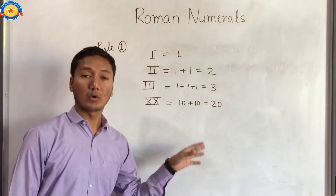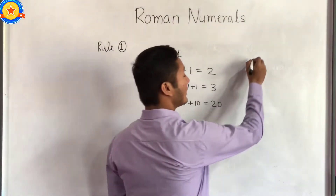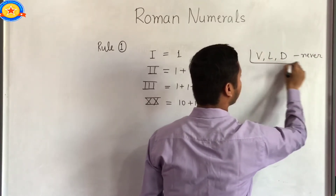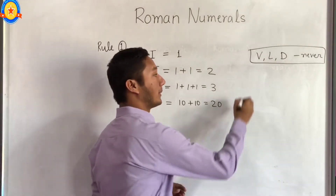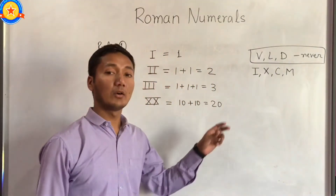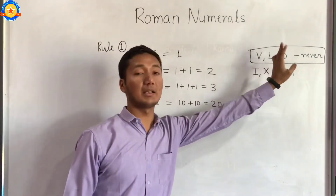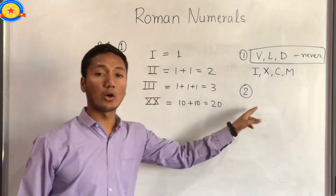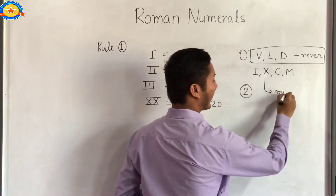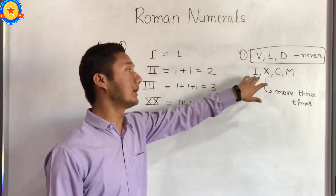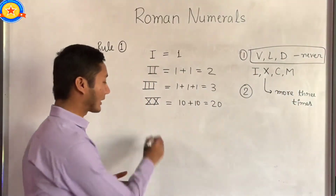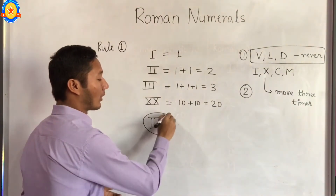There are some cautions in this rule. Caution number 1: V, L, and D are never repeated — we cannot repeat these letters. We can only repeat I, X, C, and M. Caution number 2: we cannot repeat a letter more than 3 times. So even I, X, C, and M cannot be repeated more than 3 times. For example, writing IIIII is wrong.